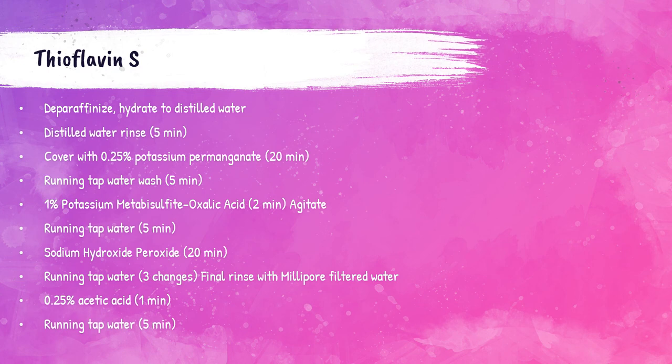Procedure: deparaffinize and hydrate to distilled water, then rinse 5 minutes in distilled water. Cover slides with 0.25% potassium permanganate for 20 minutes, then wash in running tap water for 5 minutes. Treat with 1% potassium metabisulfite oxalic acid for 2 minutes with agitation, wash in running tap water for 5 minutes, then place in sodium hydroxide hydrogen peroxide for 20 minutes. Wash in three changes of running tap water, then final rinse in Millipore-filtered water. Place in 0.25% acetic acid for 1 minute, then wash in running tap water for 5 minutes.